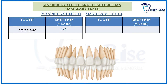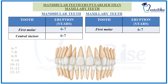Now try visualizing it. At 6 to 7 years of age, the mandibular first molar starts erupting. At this same age group, after the mandibular first molar starts erupting, the maxillary first molar also starts erupting. Meanwhile, the mandibular central incisor also starts erupting at this same age group of 6 to 7 years. Therefore, we have three teeth erupting at 6 to 7 years: the mandibular first molar, the maxillary first molar, and the mandibular central incisor.